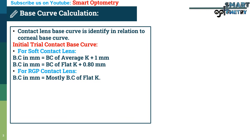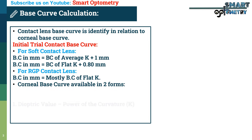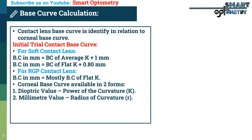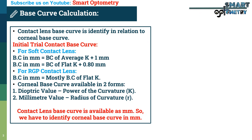First of all, we have to know how to identify the base curve of the cornea. Corneal base curve is available in two forms: 1) Dioptric value, i.e. power of the curvature, represented as K; and 2) Millimeter value, i.e. radius of curvature, represented as r. Contact lens base curve is expressed in millimeters, so we have to identify corneal base curve in millimeters.